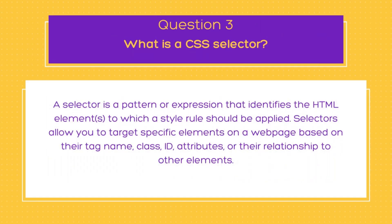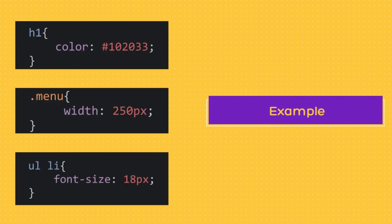Now let us move on to one of the most basic and common questions you might get asked in a CSS interview: what is a CSS selector? In CSS, a selector is a pattern or expression that identifies the HTML element to which a style rule should be applied. Selectors allow you to target specific elements on a web page based on their name (tag name), class, id, attributes, or their relationship to other elements.